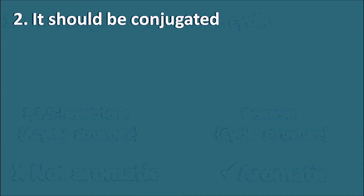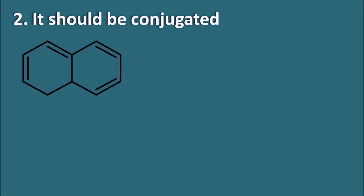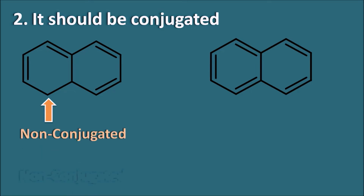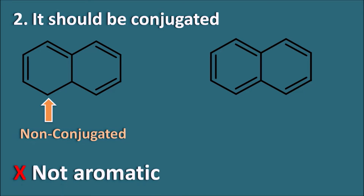The second criteria is that the compound should be conjugated. Consider two structures. In the first structure, we can observe a carbon that is not conjugated. Conjugation is the alternating arrangement of double bonds and single bonds. Since this carbon is not attached to any double bond, it is not conjugated, and so this compound is not aromatic.